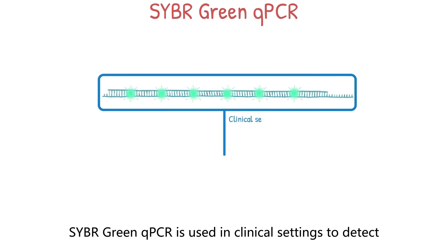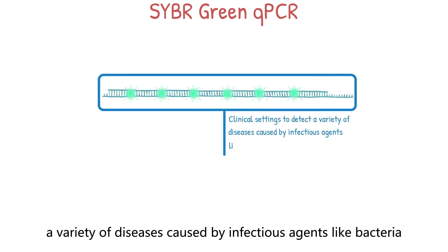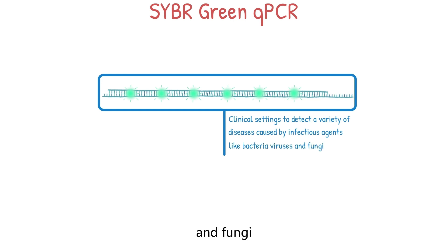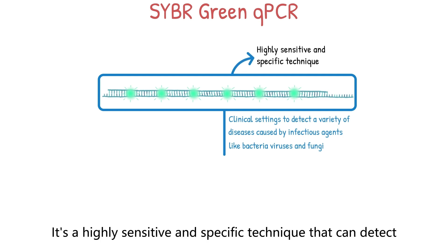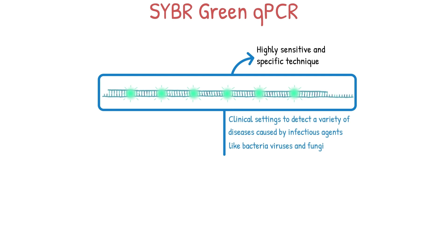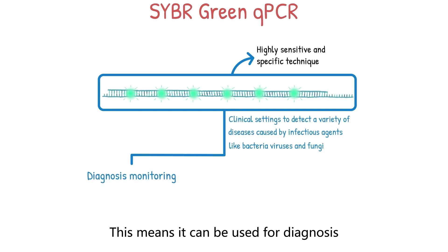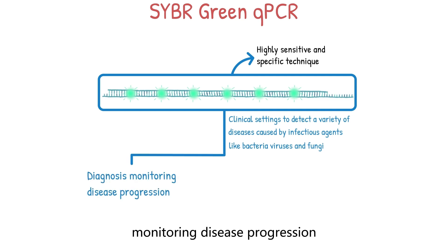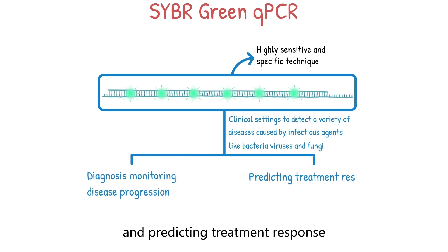CyberGreen QPCR is used in clinical settings to detect a variety of diseases caused by infectious agents like bacteria, viruses, and fungi. It's a highly sensitive and specific technique that can detect even a small amount of the target sequence in a patient sample, meaning it can be used for diagnosis, monitoring disease progression, and predicting treatment response.